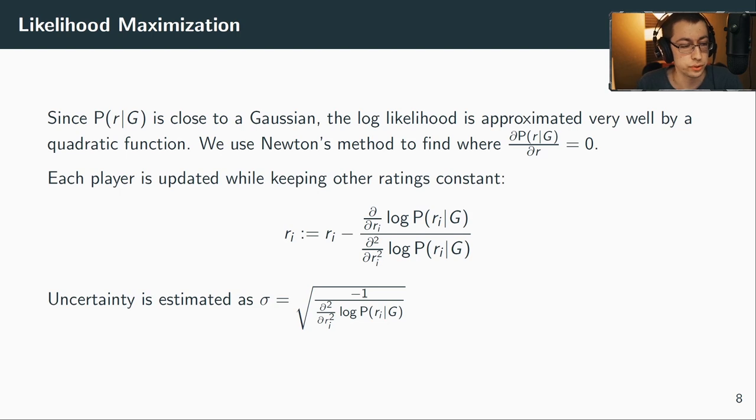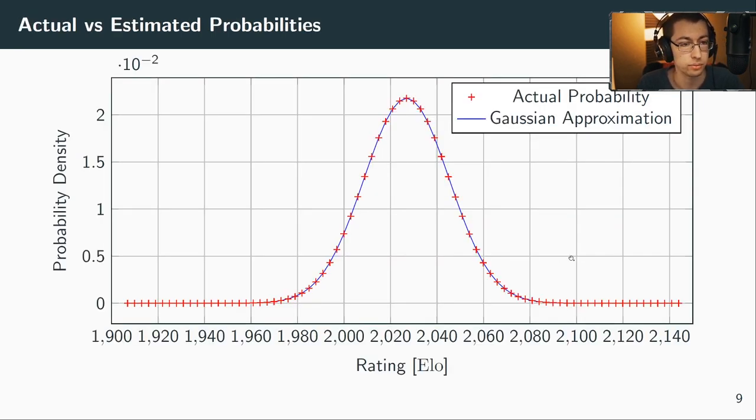Now just to prove to you that this approximation of the Gaussian is correct, in fact I calculated the likelihood distribution for myself using static ratings. You can see here in blue is the Gaussian approximation using the second derivative, and in red the actual probabilities that I sampled. Yeah, it's pretty close. At the lower values it can have a relative error of 50 percent, but it's at 10 to the minus 10.